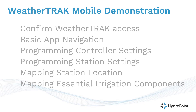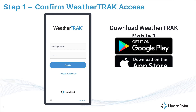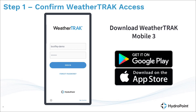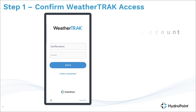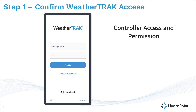As always, step one is to confirm WeatherTrack access before you go out to the site. Make sure that WeatherTrack Mobile 3 is downloaded onto the smart device that you'll be using for your installation, make sure that you know your WeatherTrack user account login and password, and make sure you've been given access to the controller you'll be programming while you're on site.